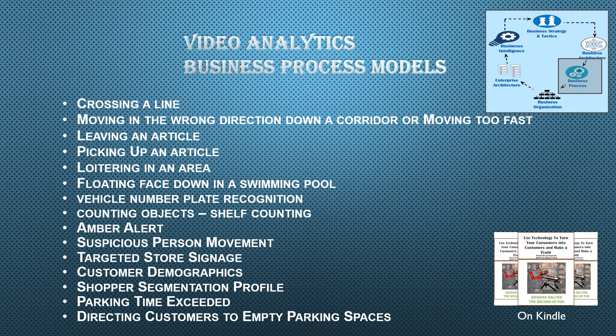So let's move around to the business process models necessary to support those sets of capabilities. Here's a listing of them. For example, somebody's crossing a line; somebody's moving in the wrong direction down a corridor or moving too fast, somebody's running away. Somebody leaves an article where they shouldn't, or they pick up an article. Loitering in an area. Floating face down in a swimming pool — there's a nice safety use case to be able to handle. Vehicle number plate recognition.